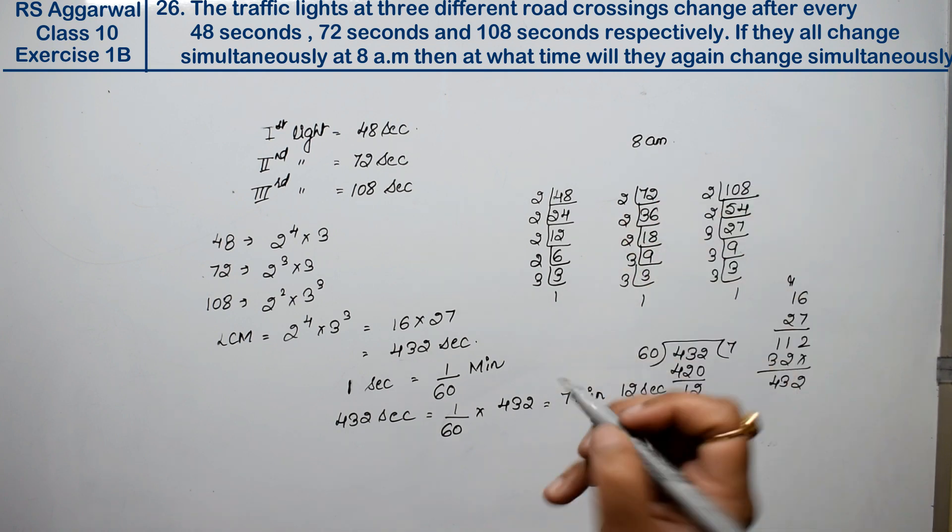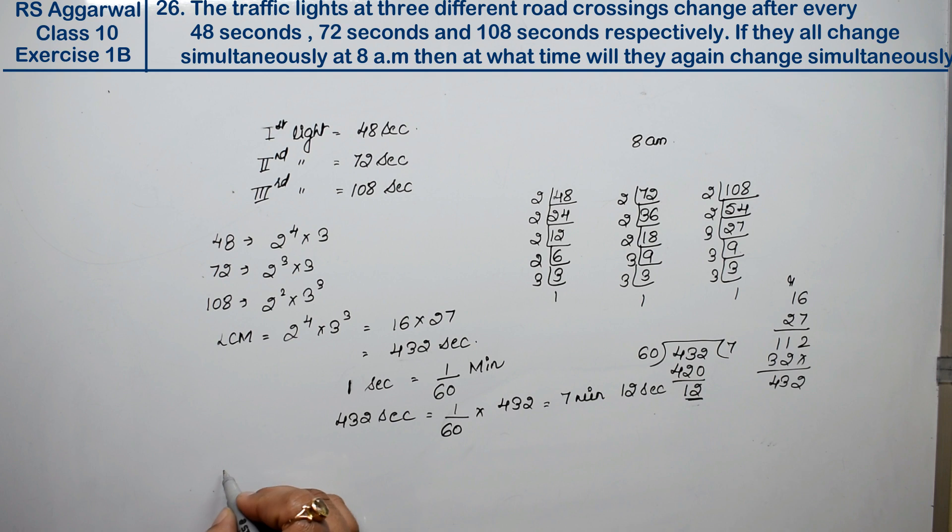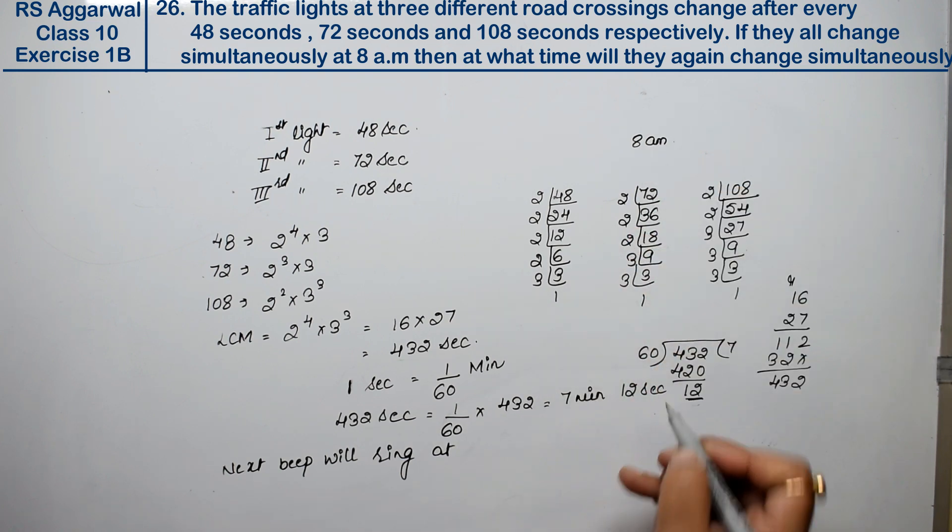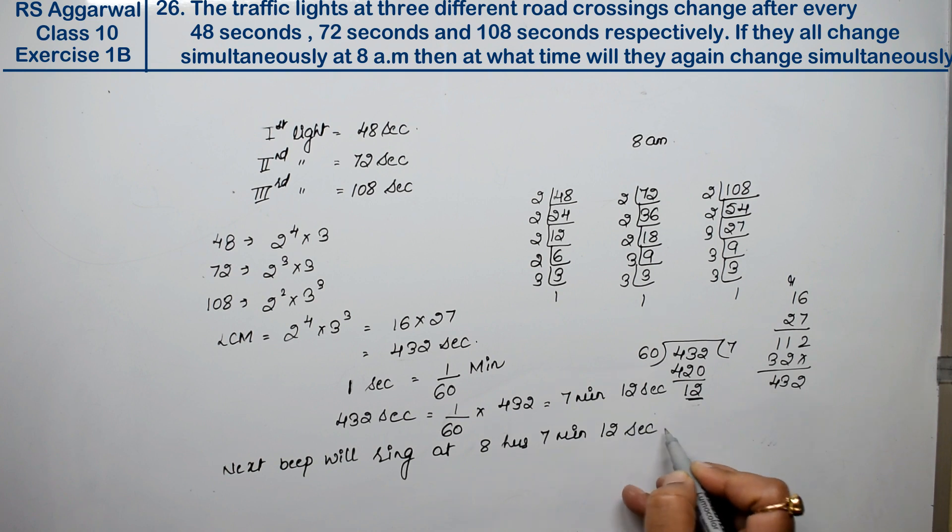The next bell will ring after 7 minutes and 12 seconds. Adding this to 8 a.m. gives us 8 hours, 7 minutes, and 12 seconds. The book answer shows 8:07:12.